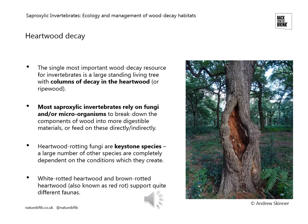Going through a few examples of these important features, the first is heartwood decay — columns of decay within the heartwood or ripewood of the tree. This is the single most important wood decay resource for invertebrates. Most saproxylic invertebrates rely upon fungi or other microorganisms that break down wood into more digestible materials, or they feed either directly or indirectly on these fungi or microorganisms. Heartwood-rotting fungi are ecosystem engineers and keystone species, and interestingly, different invertebrate faunas are associated with different types of heartwood decay. White-rotted heartwood has a different invertebrate fauna compared to brown or red-rotted heartwood.